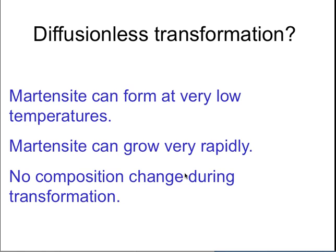Furthermore, martensitic transformation occurs in argon-nitrogen solid solutions at 40 K, and can even be produced at 4 K — so it is not reasonable to assume there is any diffusion during the transformation. All of these things together tell us that it is truly a diffusionless transformation, and the only consequence of adding alloying elements is to change the relative free energies of the parent and product phases. You need not worry at all about diffusion during the transformation — that is why it is a very simple transformation.